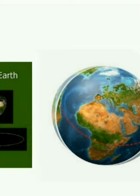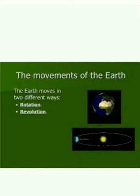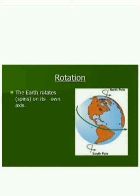Then tell me students, how do the movements of Earth take place? The Earth has two movements — they are rotation and revolution. The Earth spins continuously on its axis from west to east. This is called rotation.